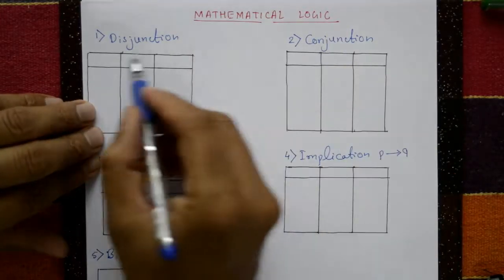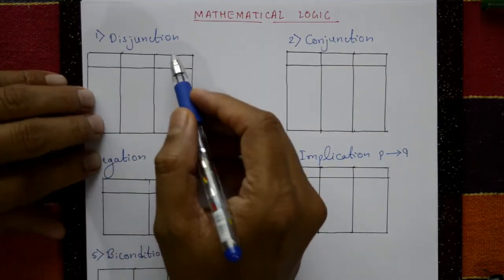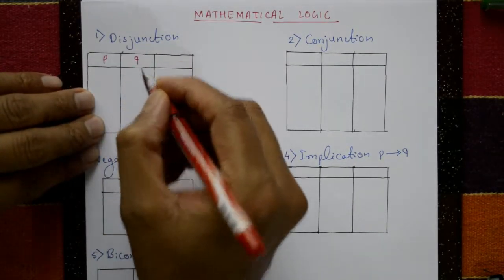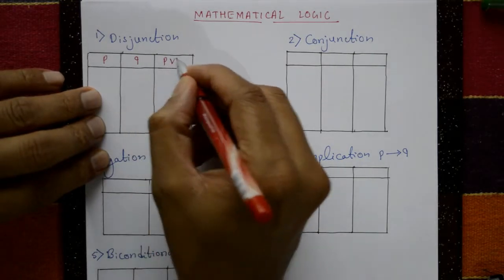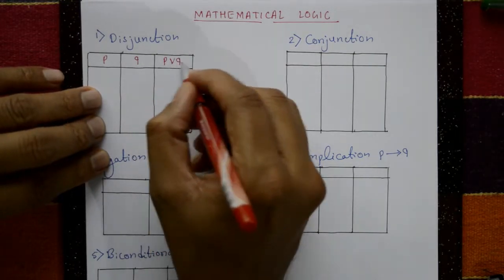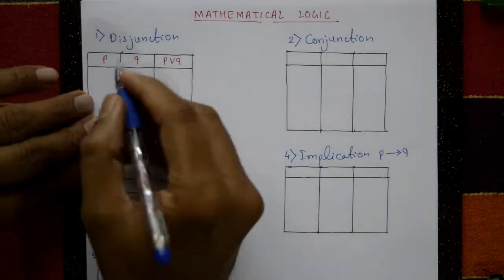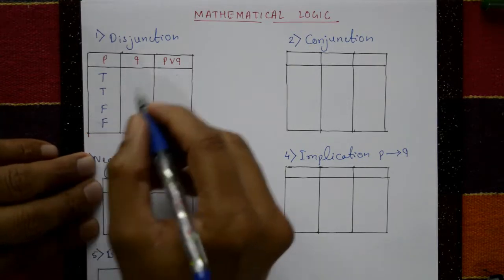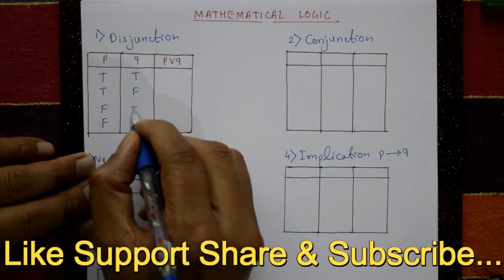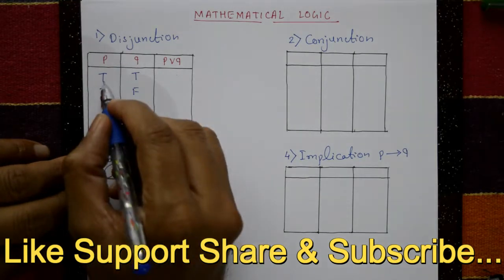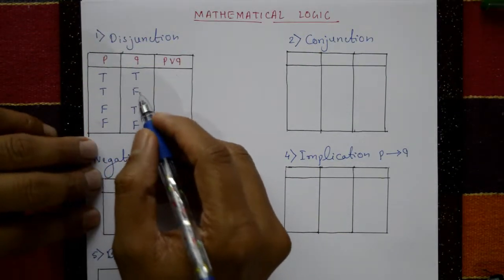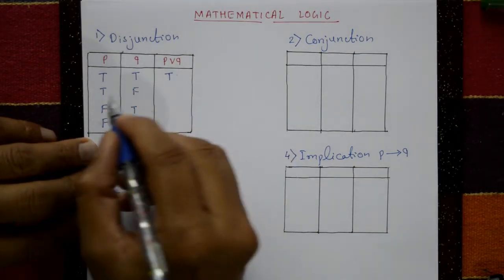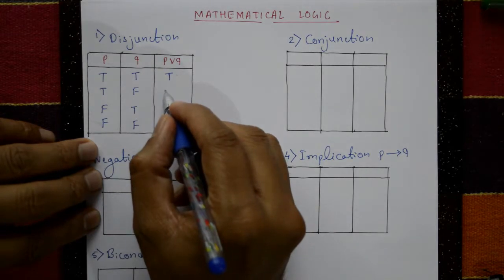Mathematical logic, first one: disjunction. P disjunction Q — this symbol is like a union symbol. The truth table: P is T, T, F, F and Q is T, F, T, F. T means true, F means false. True disjunction true is true, true disjunction false is also true.